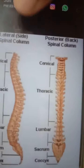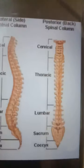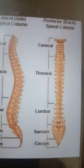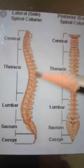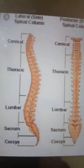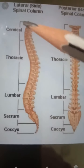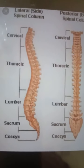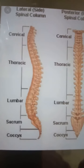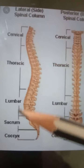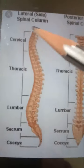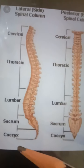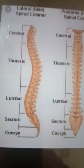In another diagram, you can see the posterior view and the lateral view of the vertebral column. Here you can see the curve of the vertebral column and the number of vertebrae — 33 in total: cervical, thoracic, lumbar, sacral, and coccygeal.